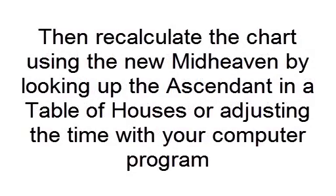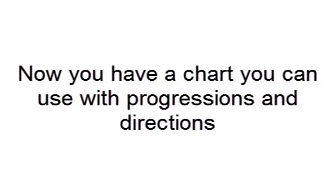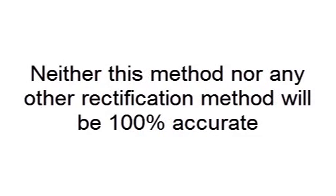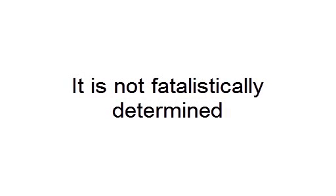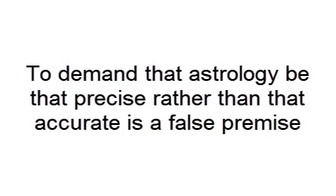Then you recalculate the chart with that new midheaven by looking up the ascendant in a table of houses or adjusting the time on your computer program. Now you have a chart that you feel you can trust — a midheaven and ascendant that you can progress and direct accurately. Neither this method nor any other rectification method is going to yield consistent, accurate to-the-minute hits — nothing in astrology does. It is not science in the way that physics is; it is not fatalistically determinant as are electrons and protons and neutrons. To demand that astrology be that precise, which it cannot be, rather than that accurate, which it is, is a false premise. It shows a philosophy of astrology that is mechanical and causal and fatalistic, rather than living in synchrony. Thank you very much.